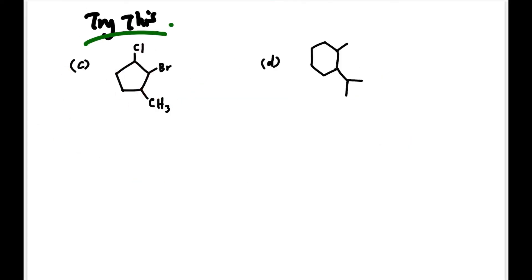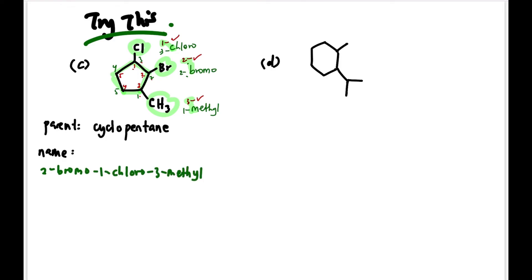Let's try questions C and D. One, two, three, four, five - the parent is cyclopentane. The substituents are Cl, Br, and CH3, which are chloro, bromo, and methyl. Time for numbering. Their positions are 1, 2, 3. If we number in red it's also 1, 2, 3, 4, 5. The locants will be the same: 1+2+3=6 for both. But we need to arrange alphabetically. Both numbering options give 2 for bromo. If red it's 1-chloro, and methyl would be 3. If the other way, it's 3-chloro and 1-methyl. We prefer red because we'll write chloro first. So the full name is 2-bromo-1-chloro-3-methylcyclopentane.